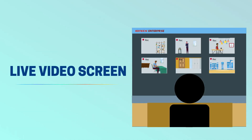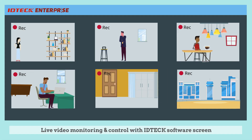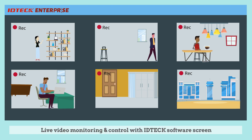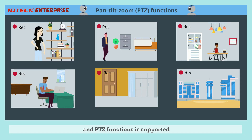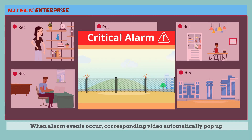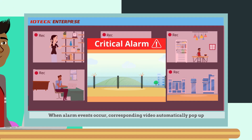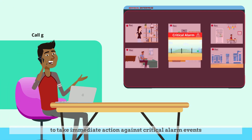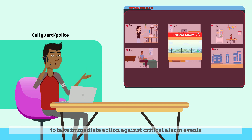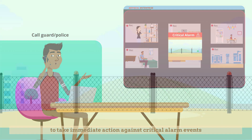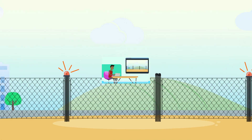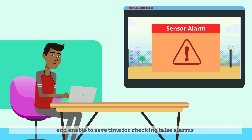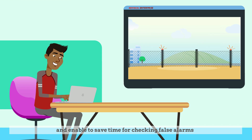Live video monitoring and control with ID Tech Software screen and PTZ functions is supported. When alarm events occur, corresponding video automatically pops up to take immediate action against critical alarm events and enables you to save time for checking false alarms.